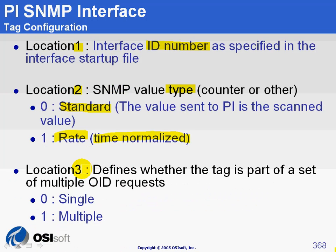Location 3 simply determines whether the interface can group the tag or not. Location 3 set to 0 means just leave this tag alone. When you set location 3 to 1, that tells the interface to try to group this tag. Location 2 and location 3 correspond to two options you have in the plugin to configure tags.